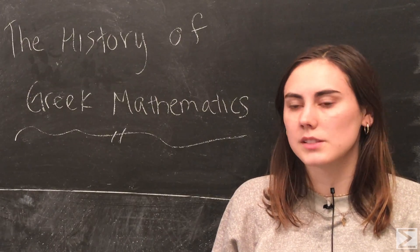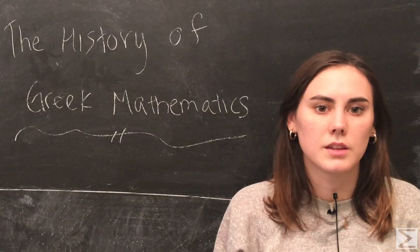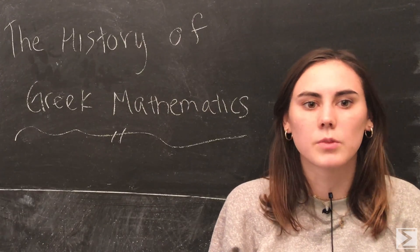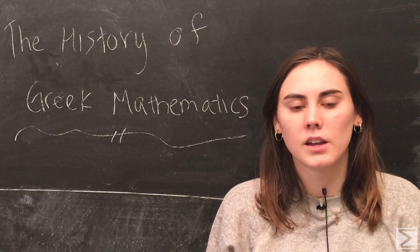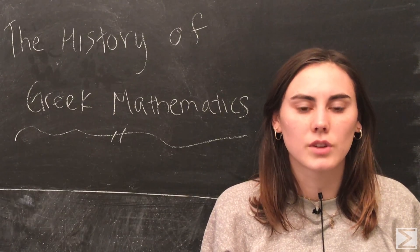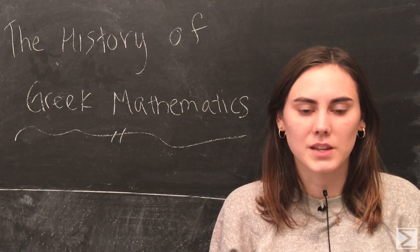For now though, this series covers the history of Greek mathematics, first beginning with the beginning of Greek mathematics and the numeral system that all the problems were created and solved in, and then it goes over three of the most important Greek mathematicians: Pythagoras and his followers, Euclid, and Archimedes.